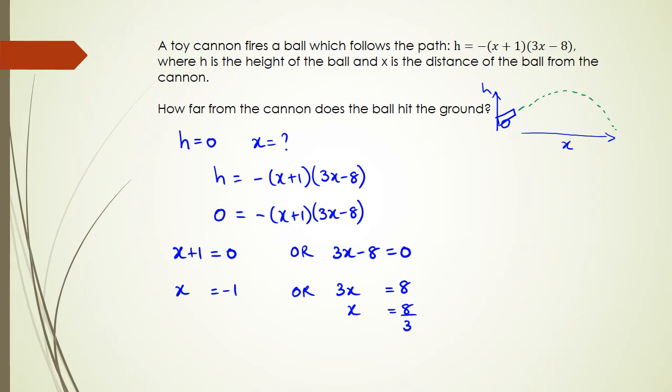So we've actually got two answers here, but if we think about it, negative 1 is not actually possible. Negative 1 happens before the cannon, so we ignore x = -1 and our actual solution is x = 8/3. Sometimes I've seen people just write a statement saying x can't be negative in this case, therefore x = 8/3. That's something I've seen people do before as well.